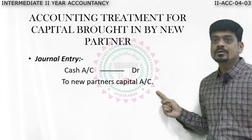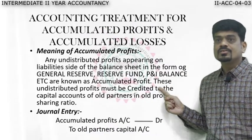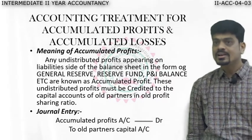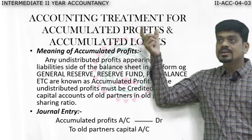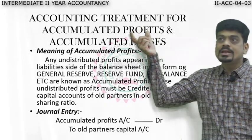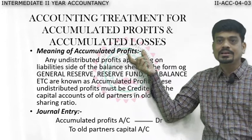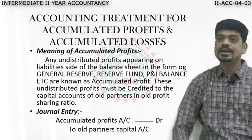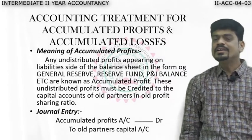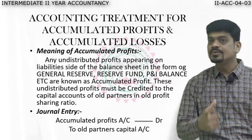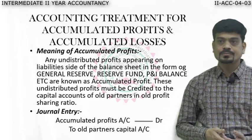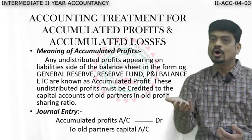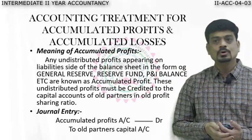The next treatment is about accumulated profits and losses. What do we mean by accumulated profit? Generally, every firm earns profit. Do you think all the profit they are going to distribute and consume? No. A portion of profit is kept aside to meet future contingencies — this we call retained earnings, which we studied in sources of finance.